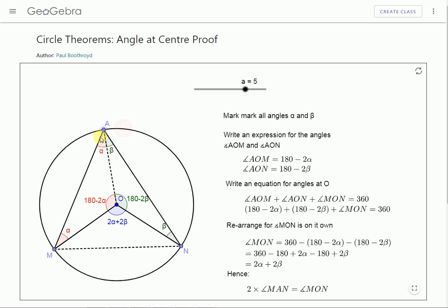So it doesn't matter where this is as long as it's in that top part even over here. This angle here is still subtended by the chord MN. So this angle is still half the angle at the center of the circle subtended by the same chord. It doesn't matter where it is in that top section.